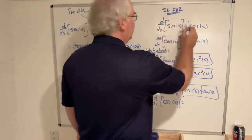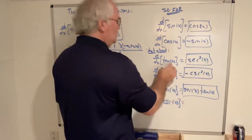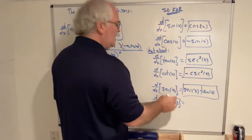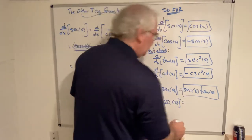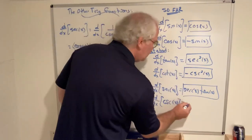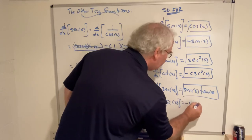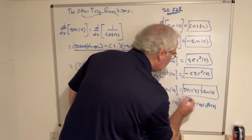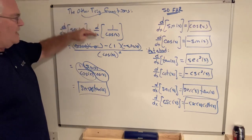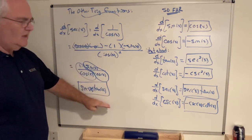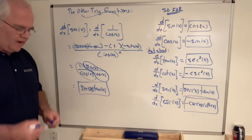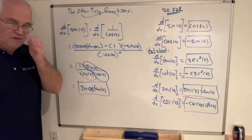The derivative of sine is cosine. The derivative of cosine is negative sine. The derivative of tangent is secant squared. The derivative of cotangent is negative cosecant squared. The derivative of secant is secant tangent. The derivative of cosecant: you just change it to negative and use the co-function. If you write d/dx of cosecant as d/dx of one over sine and go through the same process, you get negative cosecant cotangent.